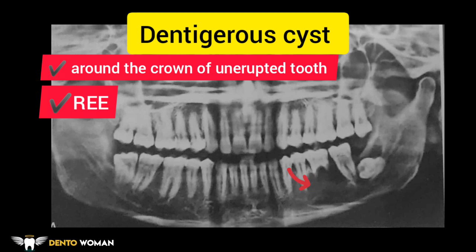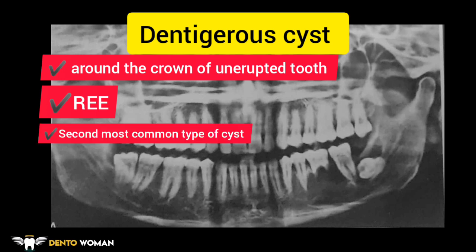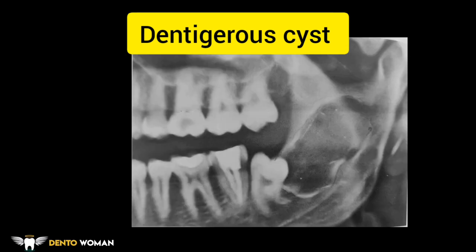The dentigerous cyst may also be due to cystic changes of the enamel organ after formation of the crown. It is the second most common type of cyst. This cropped panoramic image shows a well-defined radiolucent lesion with sclerotic margins in relation to an impacted and developing lower left third molar, attached to the CEJ, extending into the ramus almost up to the sigmoid notch. It may envelope the crown symmetrically or expand laterally from the crown, while the roots may be located in bone outside the lesion.